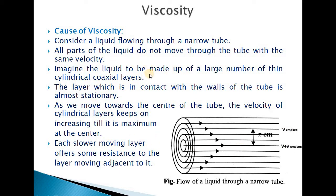Imagine the liquid to be made up of a large number of thin cylindrical coaxial layers. The layer in contact with the walls of the tube will be almost stationary — its velocity will be very very low. As we move towards the center of the tube, the velocity of cylindrical layers keeps increasing until it is maximum at the center. This is shown in the figure by arrows indicating velocity increasing from the wall towards the center of the tube.